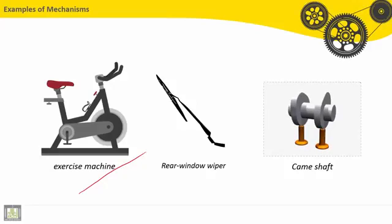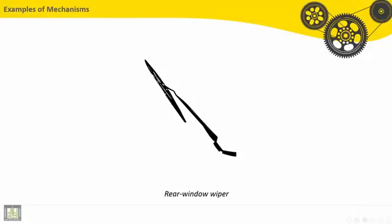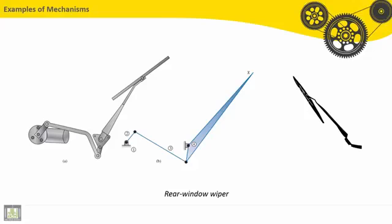An exercise machine also, it is a mechanism or a machine. A rear window wiper also, camshaft, it is a mechanism. For a rear window wiper, it can be represented here simply with a kinematic schema. We will see how to simply represent the kinematic schema and how it is used to achieve the synthesis of the mechanism.